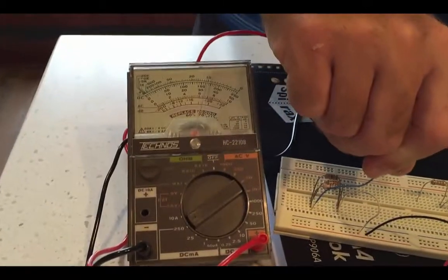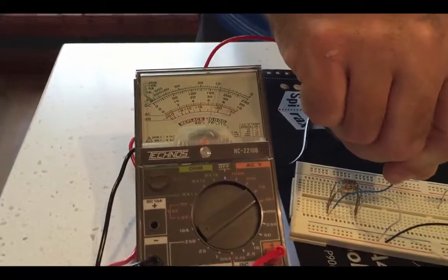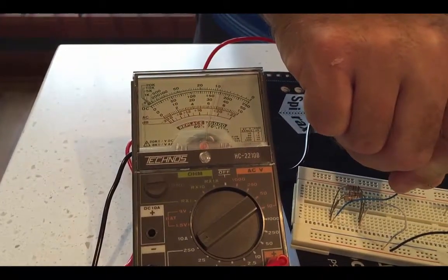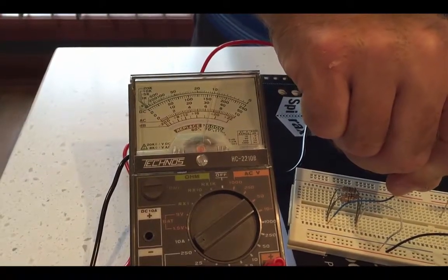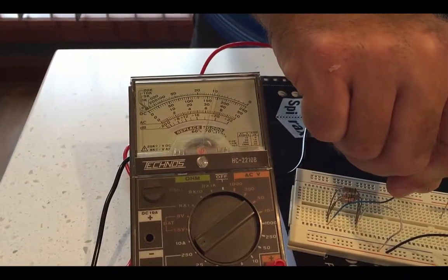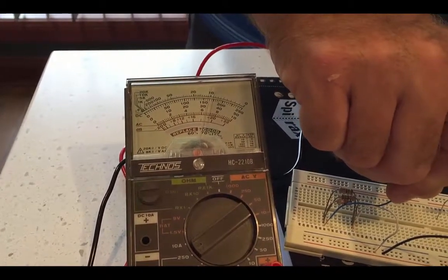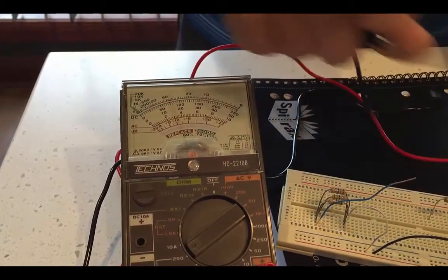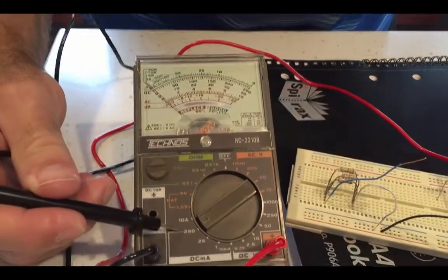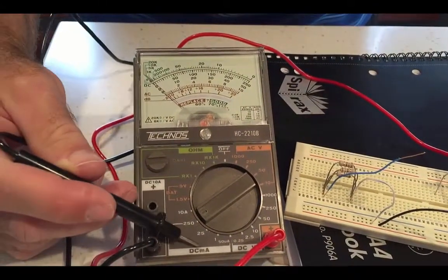looking at our scale there. So our scale goes 0, 50, 100, 150. The middle bar there would be 175. So that's probably saying it's about 165 there on that scale. Now, if you look at the scale down the bottom there, I've got that set to 250 milliamps.